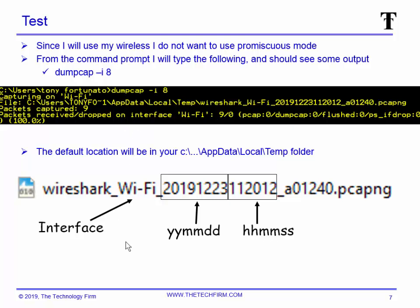For those interested, the default file name has a specific syntax: 'Wireshark' underscore the interface name — in this case Wi-Fi — then the year, month, day, followed by hours, minutes, seconds, underscore, and then six characters I honestly have no idea about. The Wireshark gods chose some random characters to make sure the file name is unique, and that's good enough for me.